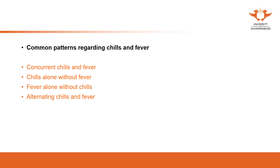These four are actually the only situations that chills and fever can happen. Concurrent chills and fever means the patient manifests both chills and fever at the same time. Chills alone without fever or fever alone without chills means the patient only feels cold or only feels fever. Alternating chills and fever describes the situation where the patient feels cold for a certain period, then followed by fever, and after the fever it goes back to chills again.